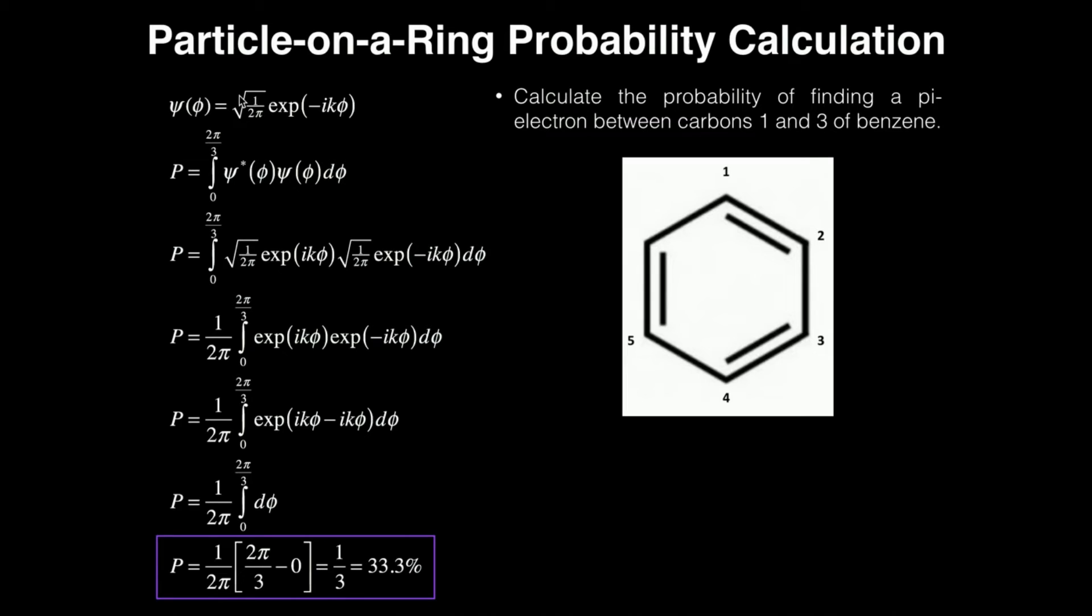Now, remember, unlike particle in a box where we didn't really have to worry about the complex conjugate, I have to take the complex conjugate of one of the wave functions right here. So that means I have to take the negative of whatever the i is. So it's already negative, so it's actually going to become positive.